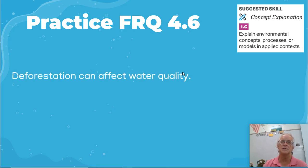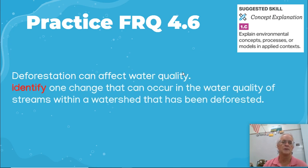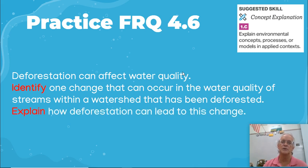Let's look at Practice FRQ 4.6: Deforestation can affect water quality. Can you identify one change that can occur in the water quality of streams within a watershed that has been deforested? And two, can you explain how deforestation can lead to this change? Thank you, and I hope this has been helpful.